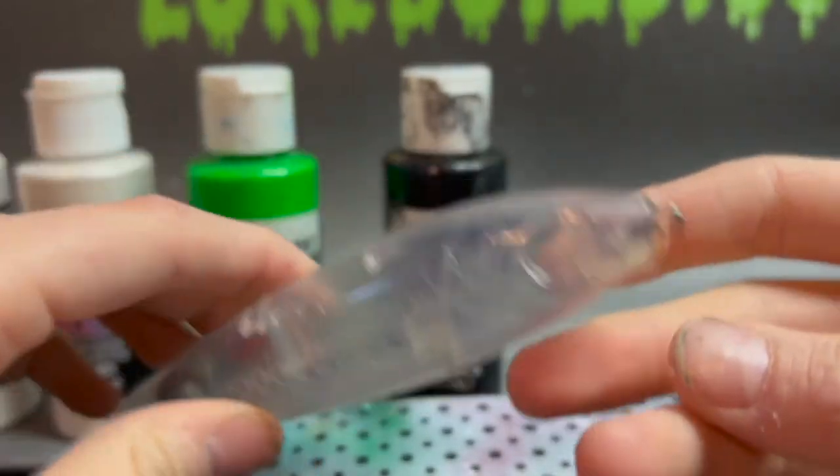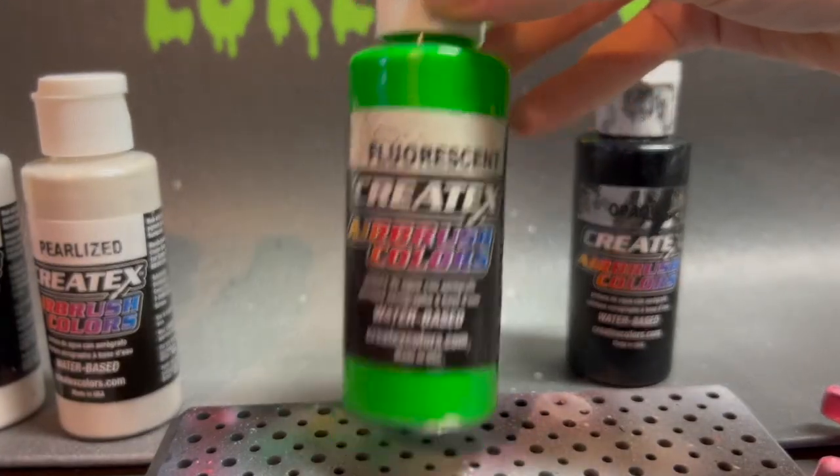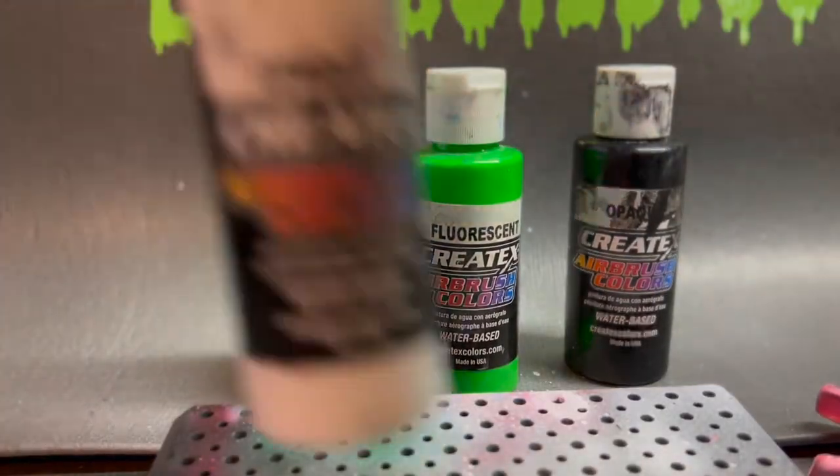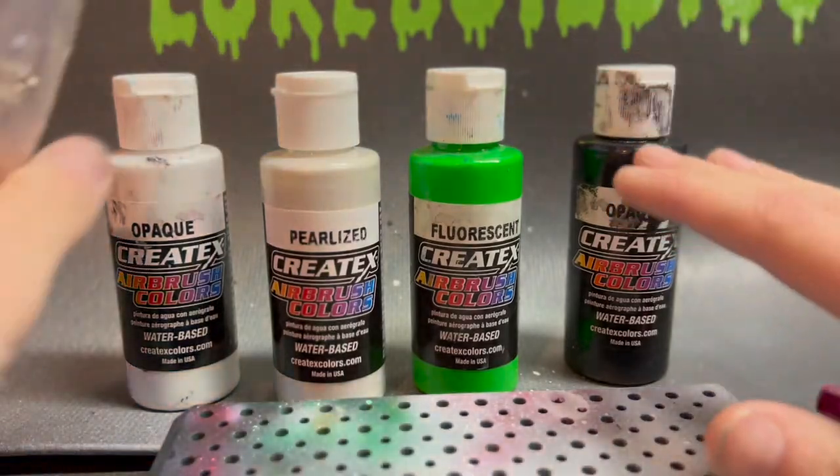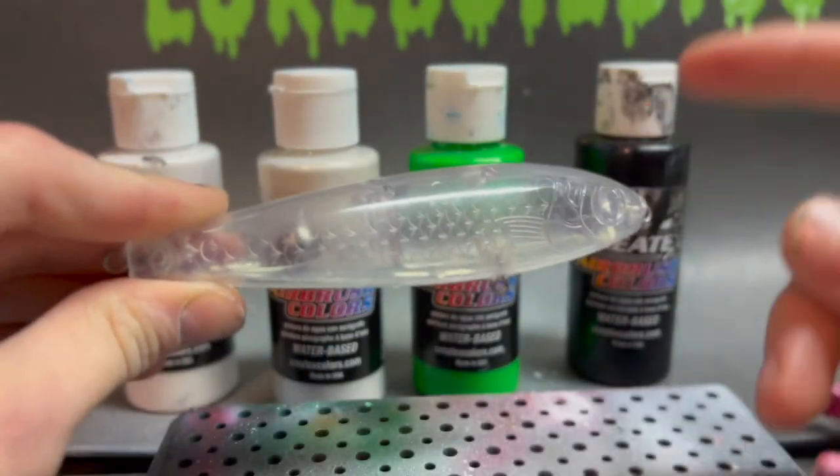And the paint we're going to be using is opaque black, fluorescent green, and then opaque white. So these will be the four colors we'll be using for this easy lure pattern for beginners.